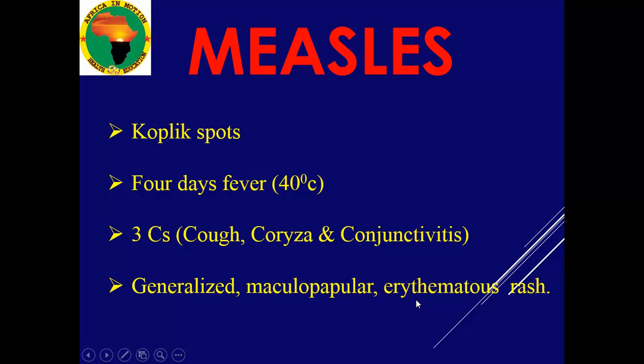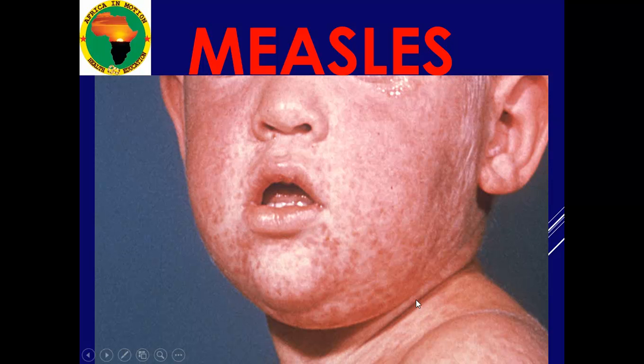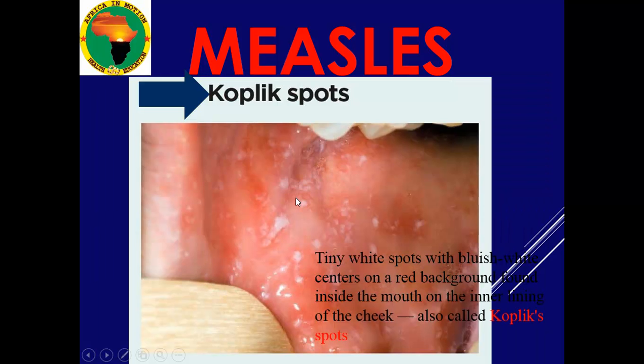There are three signs you cannot miss with measles, characterized by the three C's: coughing, coryza, and conjunctivitis. There is also a generalized maculopapular erythematous rash — erythematous means reddish — all over the body. When you check the mouth, you will see tiny white spots with a bluish center; these are called pathognomonic signs, meaning they are characteristic of measles and not typically found in other diseases.